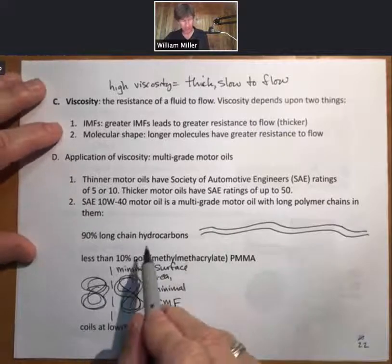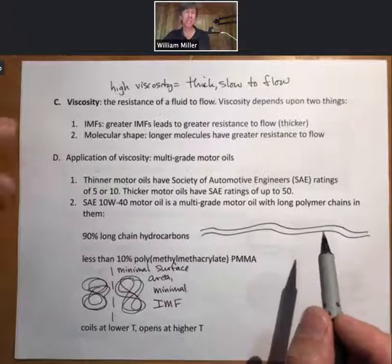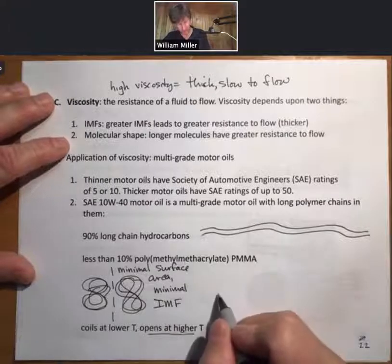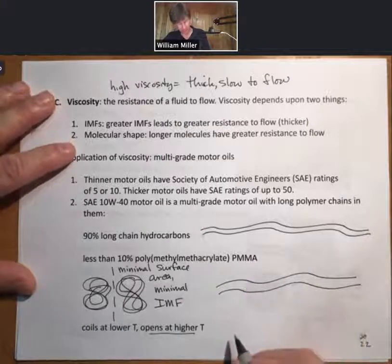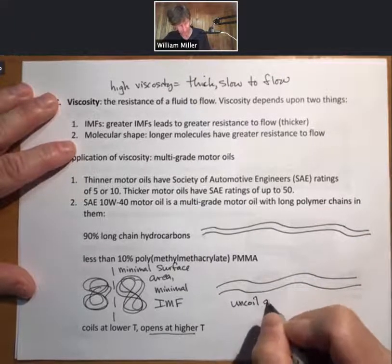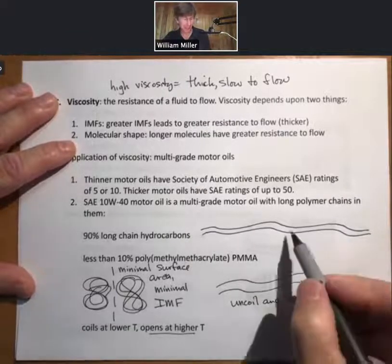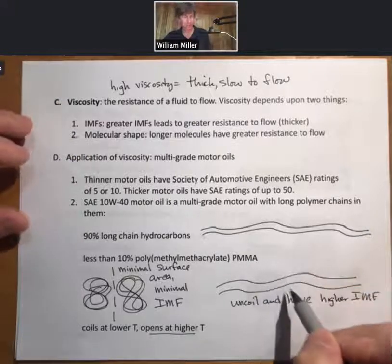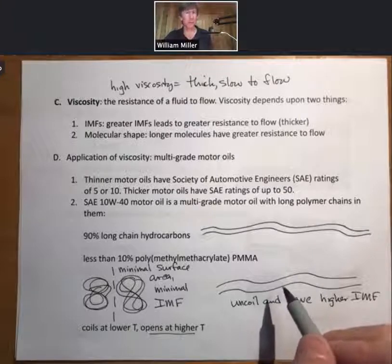As the other hydrocarbon chains warm up, their viscosity decreases. These polymer chains uncoil and have higher IMF at the exact time that these polymer chains, as they warm up, get slightly less viscosity. By matching these two, you can have viscosity that is the same at all of your operating temperatures, or within a very narrow band of viscosities.